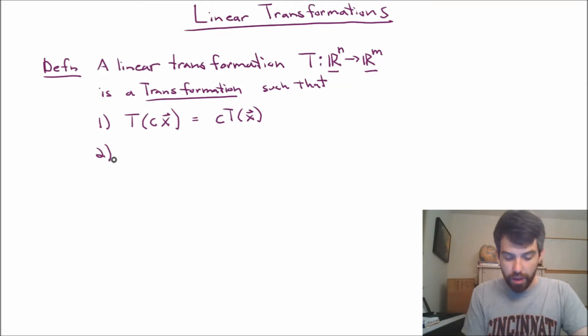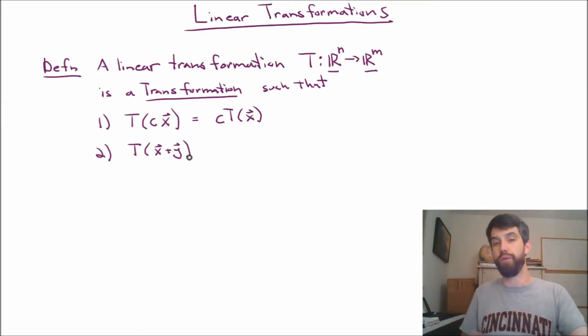And then secondly, we have that the transformation, if I apply it to the sum of two different vectors, remember vector addition was our other operation that we have on vectors, that this is going to be the sum of the transformation applied to the first vector and the transformation applied to the second vector as well. And our sort of fancy math way of saying this is that it respects scalar multiplication and vector addition.